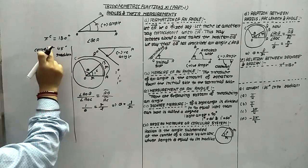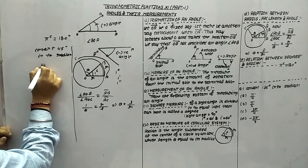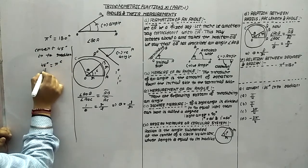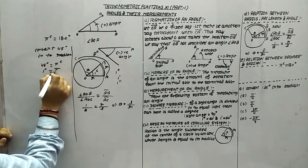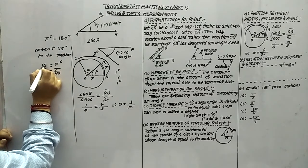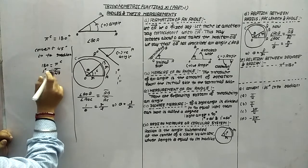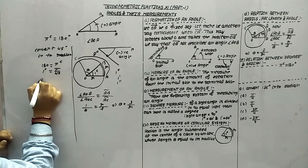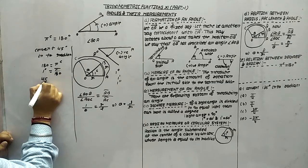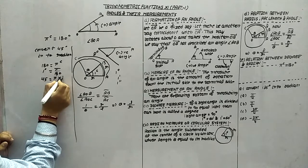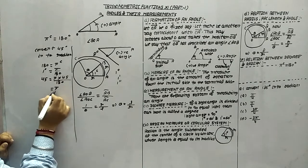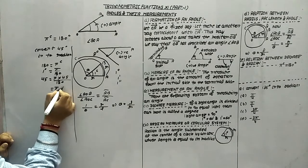In the unitary method, because we have to convert degree into radian: 180 degrees is equal to pi radian, so one degree is equal to pi upon 180. Therefore 45 degrees means pi times 45 upon 180, which equals pi by 4 radian.